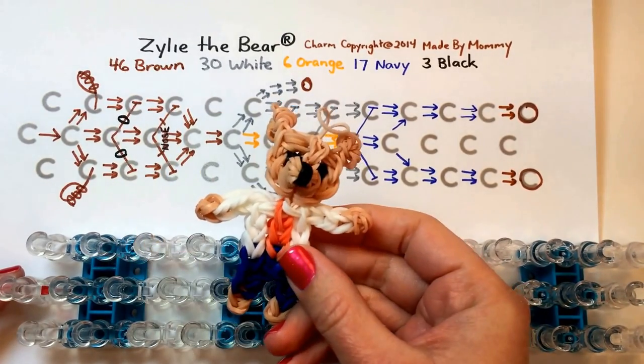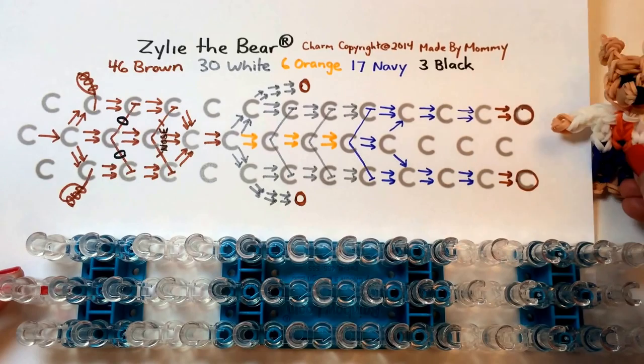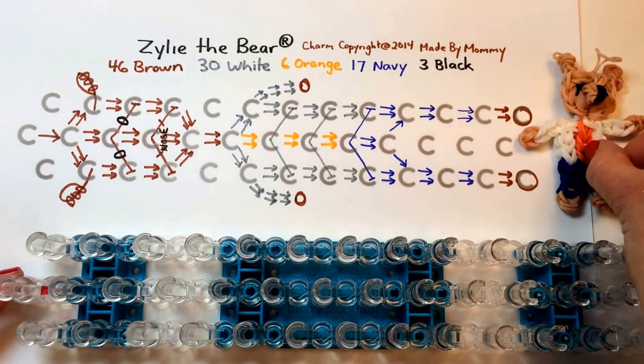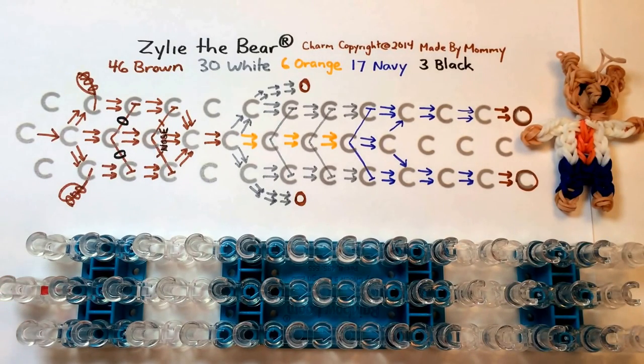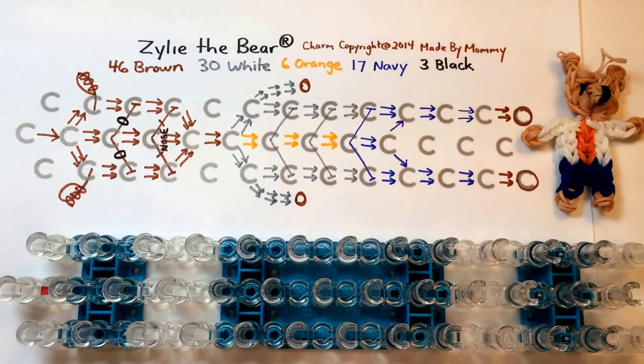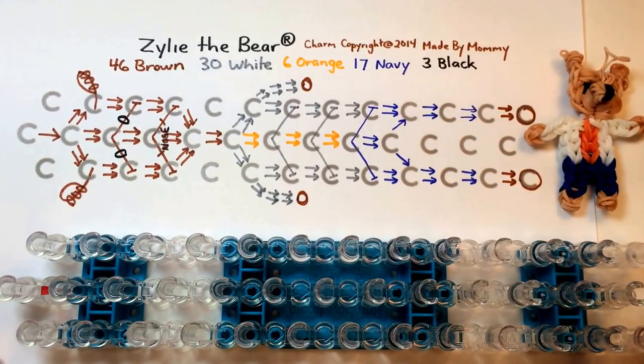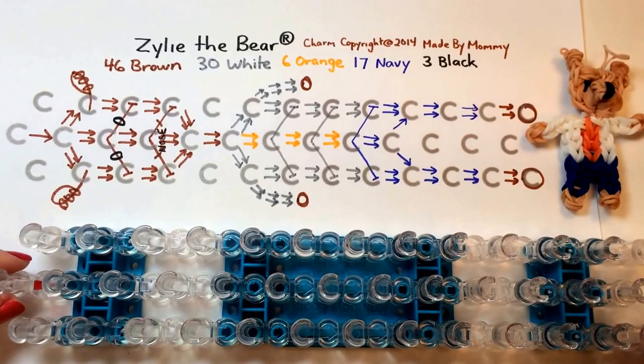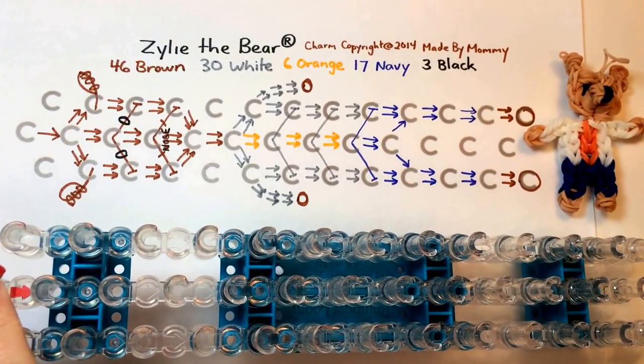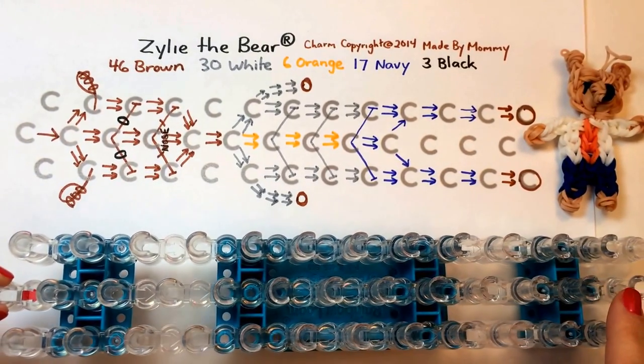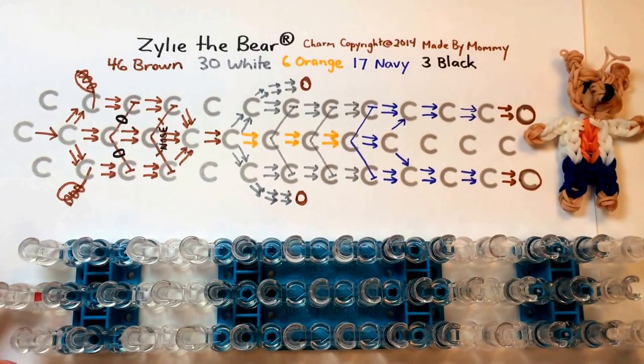Xylee the Bear requires 46 brown rubber bands, 30 white rubber bands, 6 orange, 17 navy, and 3 black. You'll want to put the rubber bands on in the order I do, starting on the side with the arrow and going along the whole length of your loom.